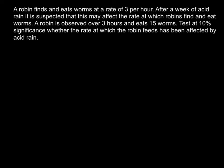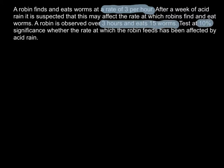Here's the question: a robin finds and eats worms at a rate of 3 per hour. After a week of acid rain, it is suspected that this may affect the rate at which robins find and eat worms. A robin is observed over 3 hours and eats 15 worms. Test at 10% significance whether the rate at which the robin feeds has been affected by acid rain. The rate at which they normally eat is 3 per hour, and then it's observed over 3 hours eating 15 worms. The observed value is 15 in a 3-hour period, so we're going to look at what lambda will be in a 3-hour period.